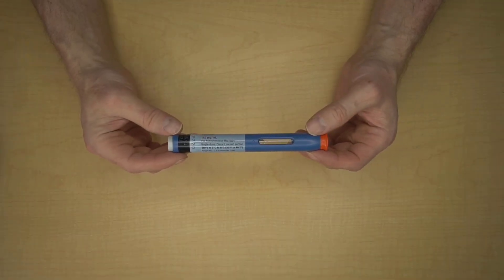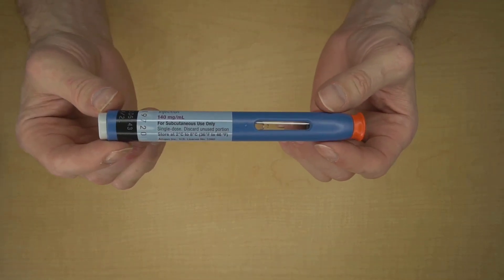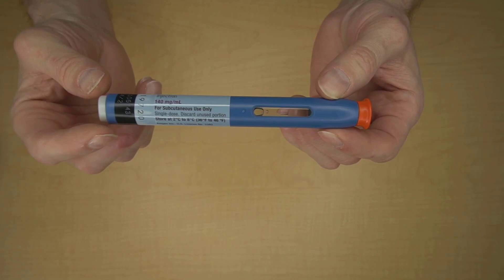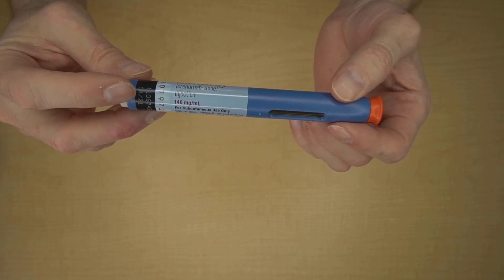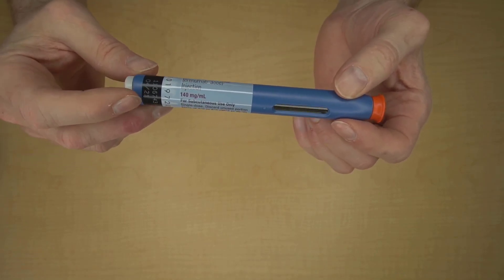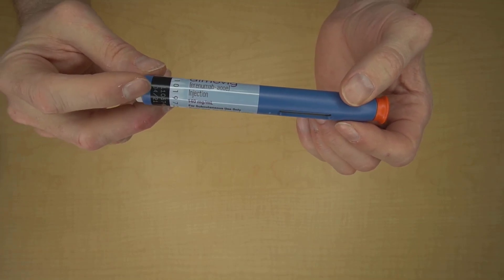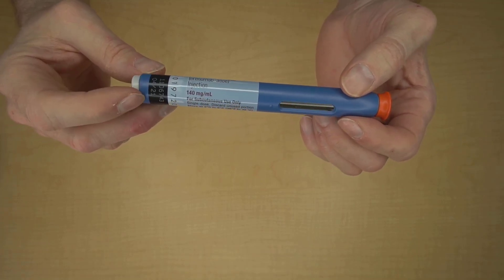Before we talk about the four injection steps, let's take a look at the auto-injector itself. Starting with the top right here, this is the start button. Right here, you can see the expiration date, and you should always check the expiration date and never use expired medicine. This expiration date is April 2021.